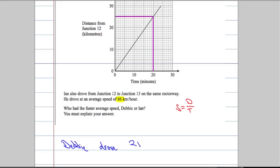So Debbie drove 25 kilometers in 20 minutes. That means that one hour - how far would she go? One hour at that speed. One hour is going to equal, well it's three lots of 20 minutes, so it's going to be three lots of 25.